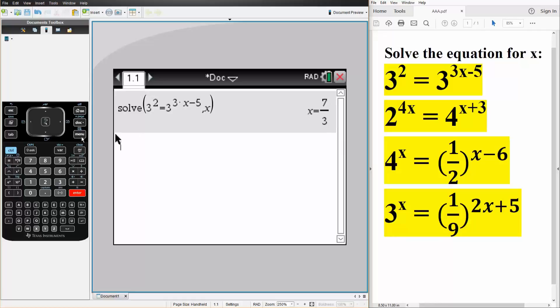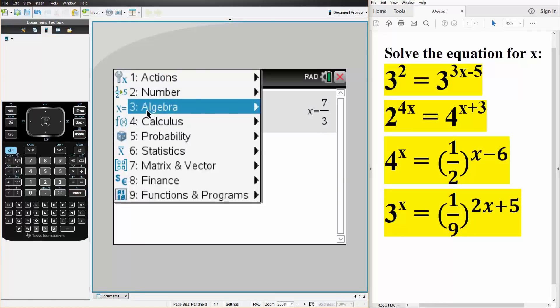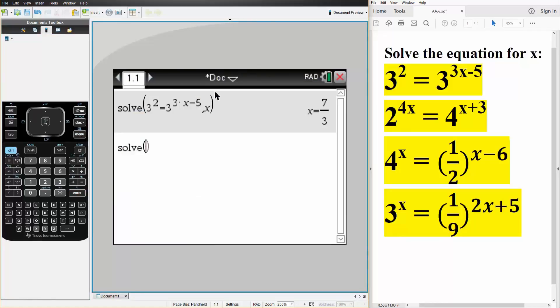And now we'll do the other three problems, same way: menu, algebra, solve. We have 2 raised to 4 times x is equal to 4 raised to x plus 3. We're solving for x, so comma x, hit enter. The answer is x is equal to 3.